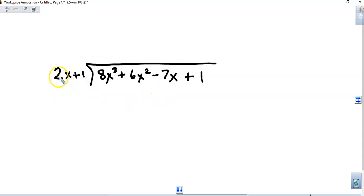I'm going to ask myself what times 2x will give me 8x to the third, and that is going to be 4x squared.